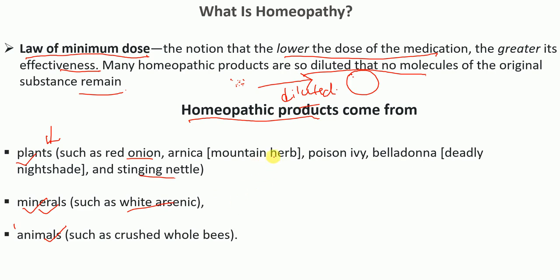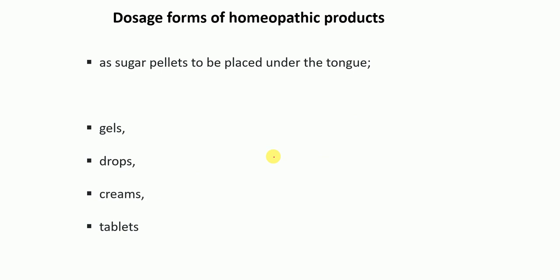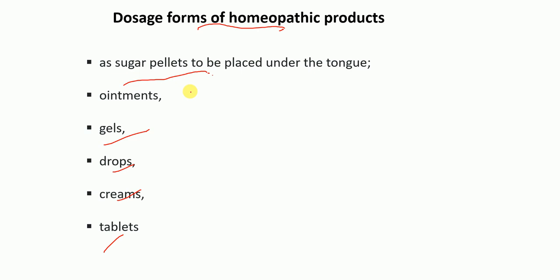Homeopathic products are available in various dosage forms: sugar pellets to be placed under the tongue, gels, drops, creams, tablets, and ointments. These are the different dosage forms in which homeopathic products are available.